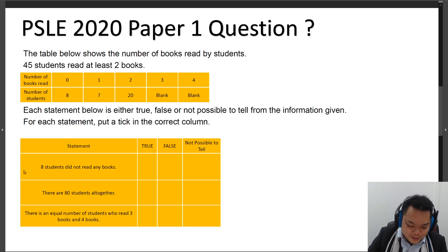So the first statement says that 8 students did not read any books. To verify if this is true, false, or not possible to tell, we simply look at this. This one, we know that this is true.